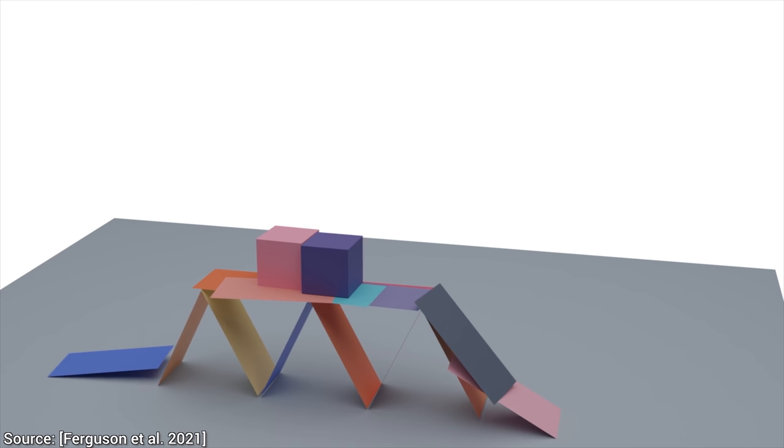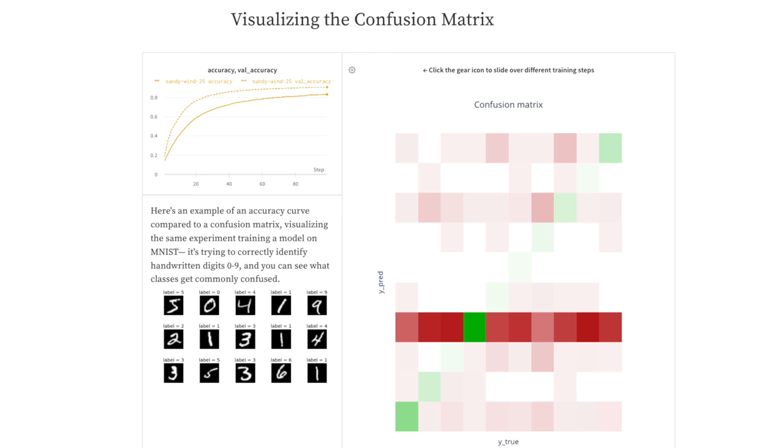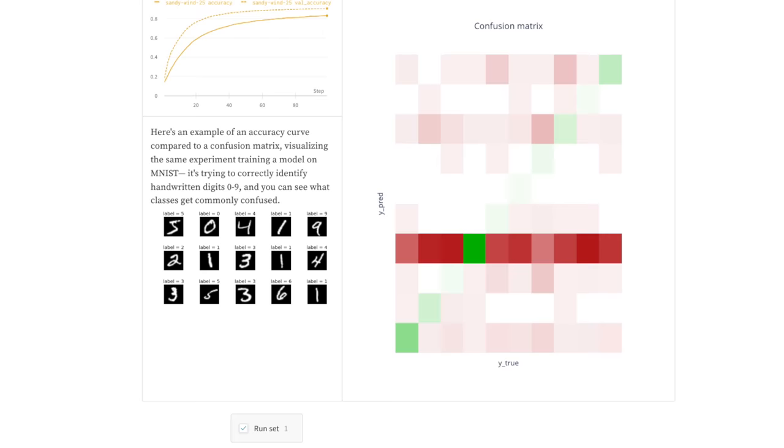This episode has been supported by Weights and Biases. In this post, they show you how to use their tool to visualize confusion matrices and find out where your neural network made mistakes, and what exactly those mistakes were.